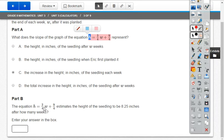The equation h is equal to three-fourths w plus nine-fourths estimates the height of the seedling to be 8.25 inches after how many weeks? So this 8.25, that is going to be a height. So let's go ahead and rewrite the equation and I'm going to be using a mouse so my handwriting is probably not going to be very good. So we have eight and a quarter.